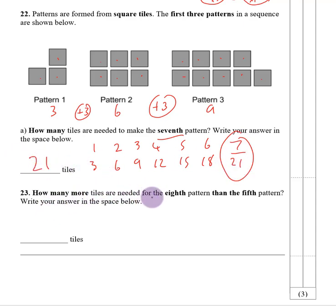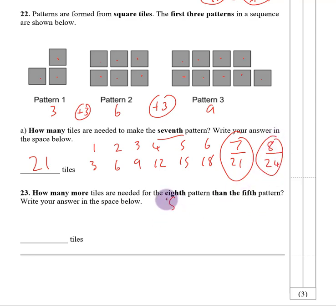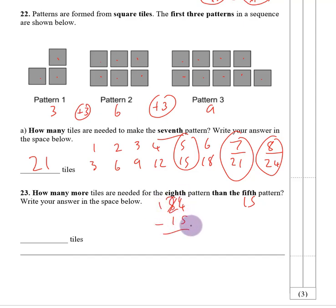How many more tiles are needed for the eighth pattern than the fifth pattern? The eighth pattern will be 24 tiles and the fifth pattern is 15 tiles. So 24 minus 15: 4 take away 5 we cannot do, borrow — 14 take away 5 is 9; 1 take away 1 is 0. The difference is 9 tiles.